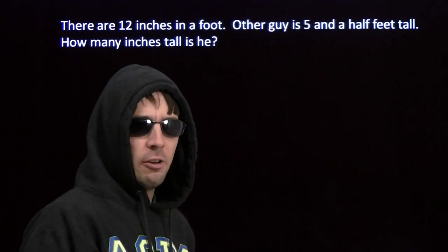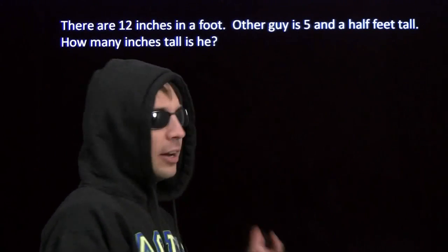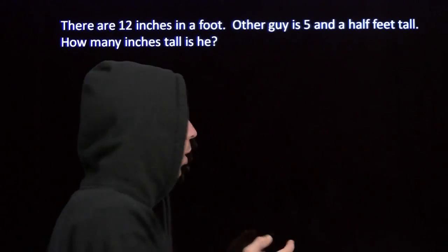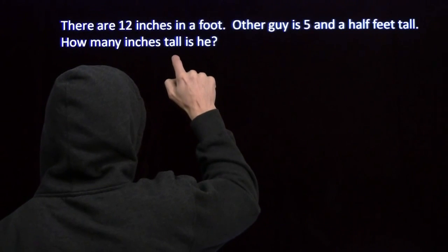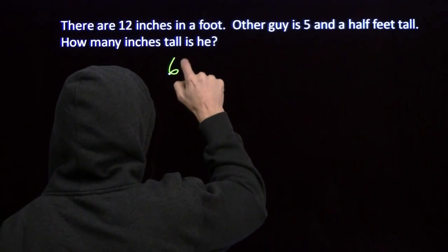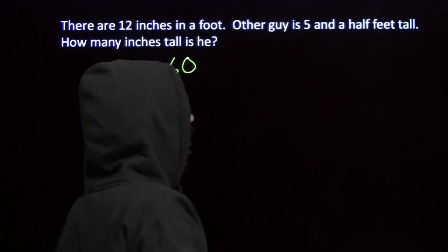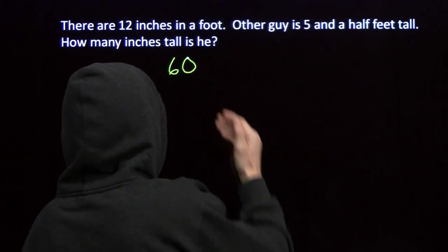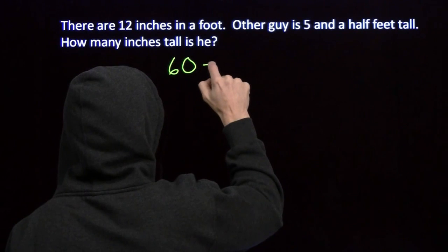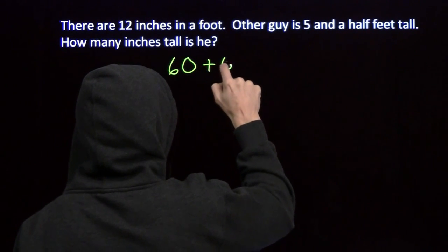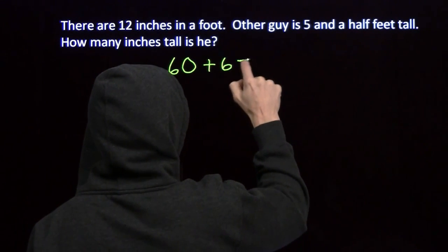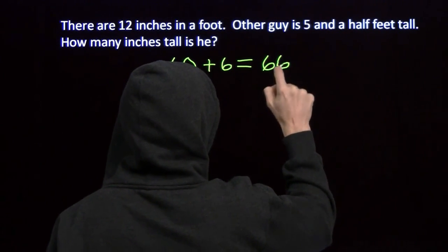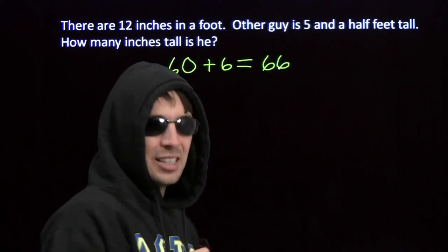Well, there are 12 inches in a foot. So if I've got 5 feet, that's 5 times 12 — that's 60 inches. Tack on another half foot: half of 12 is 6, so a half of a foot is 6 more inches, and that gives us 66 inches.